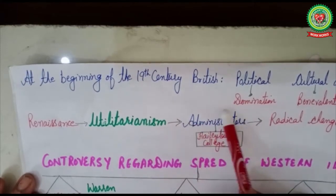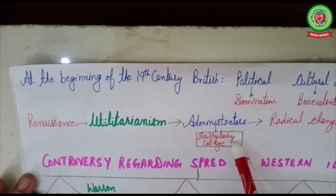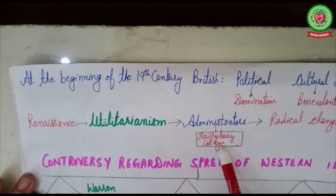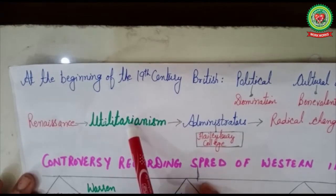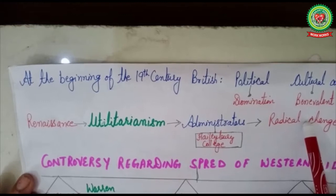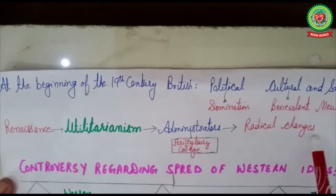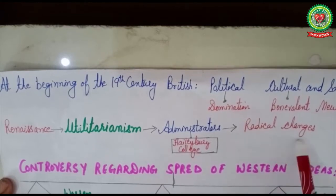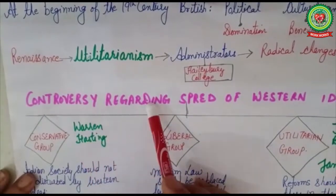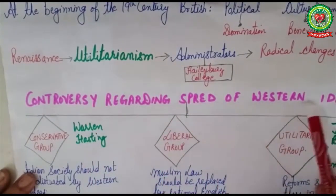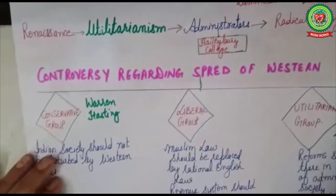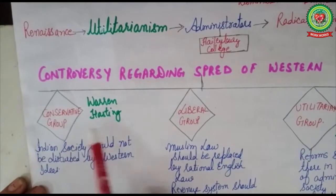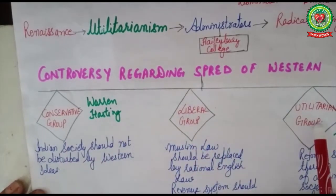The administrators of England who came to serve India, mainly from Haileybury College, were inspired by utilitarianism and were in favor of bringing radical changes in India in every sphere — social, cultural, and religious. So there was a controversy regarding whether to spread western ideas in India or not, leading to three schools of thought: the conservative group, the liberal group, and the utilitarian group.